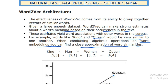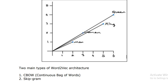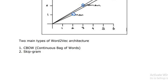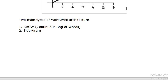You can find a close approximation of word similarity. As you can see in the diagram, 'king' and 'queen' have similar kinds of vectors. 'Woman' and 'queen' are on the same vector, and 'king' and 'man' are closer to each other, but based on semantics, 'queen' and 'king' are close to each other. There are two methods of Word2Vec: one is Continuous Bag of Words, and the second is Skip-gram.